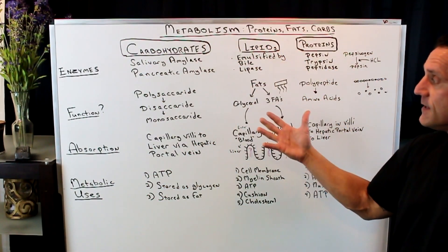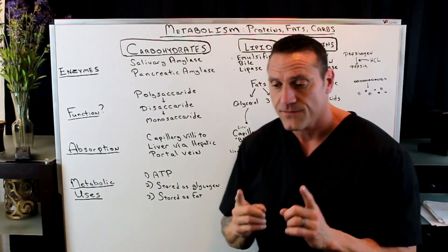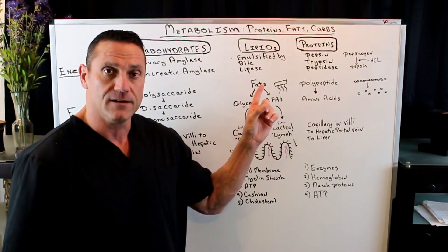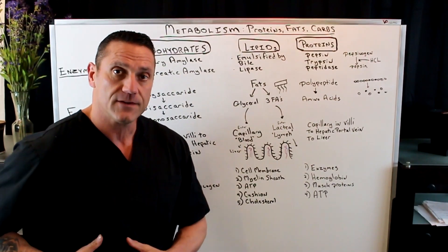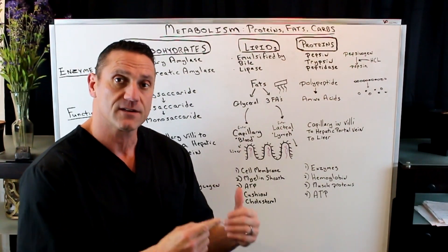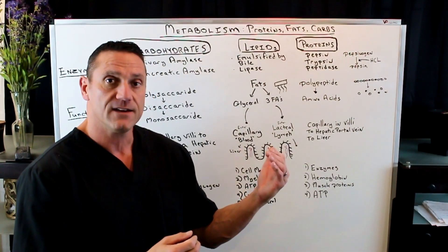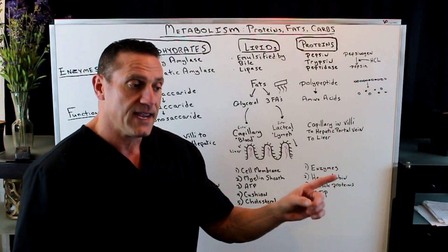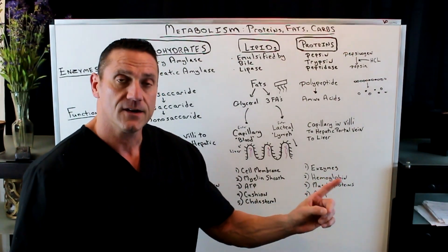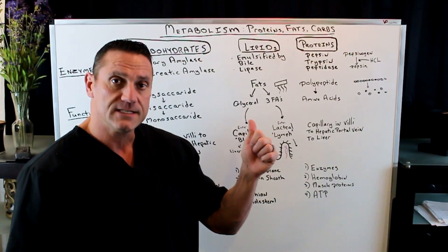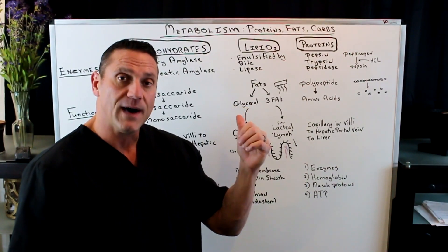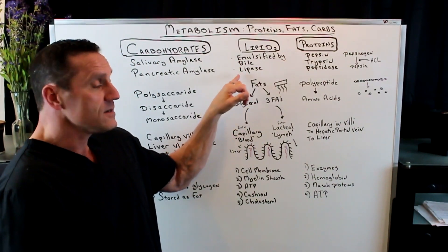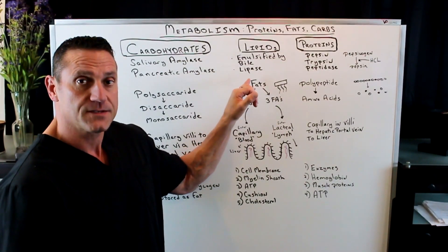So let's break it down to lipids. Lipids are first emulsified by bile. Bile is made in the liver, stored and concentrated 20 times in the gallbladder. When we take in a fatty substance, once it bypasses the stomach and goes to the small intestines, the pancreas triggers and releases an enzyme to tell the gallbladder to release bile. The function of bile is to break down the fats.